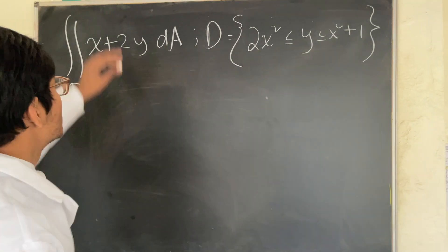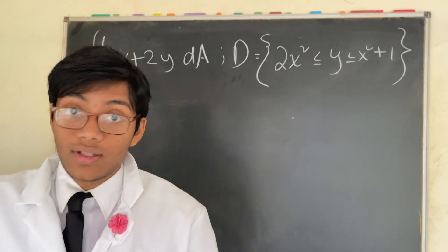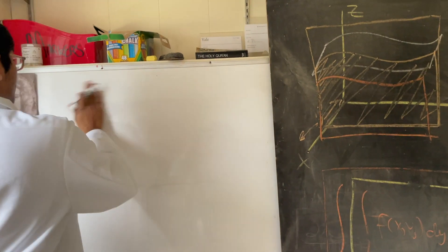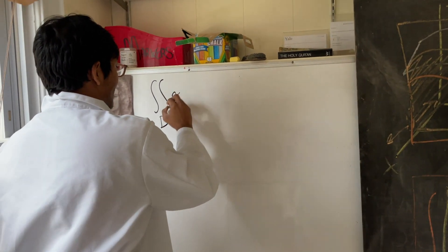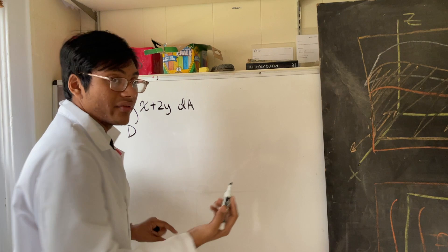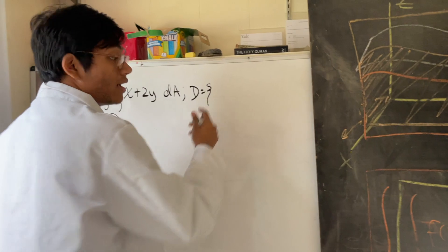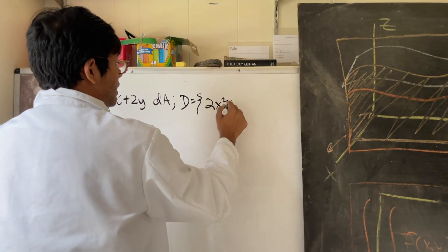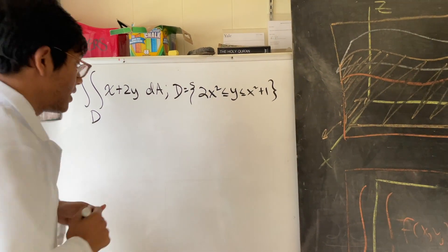The first thing you want to do in these problems is visualize the region — what does our region D look like? That's why we're gonna check out the whiteboard. So on the whiteboard, let's write down our problem once more: we have the double integral over the region D of x plus 2y dA, integrating over the region where the area is between 2x squared and x squared plus 1.